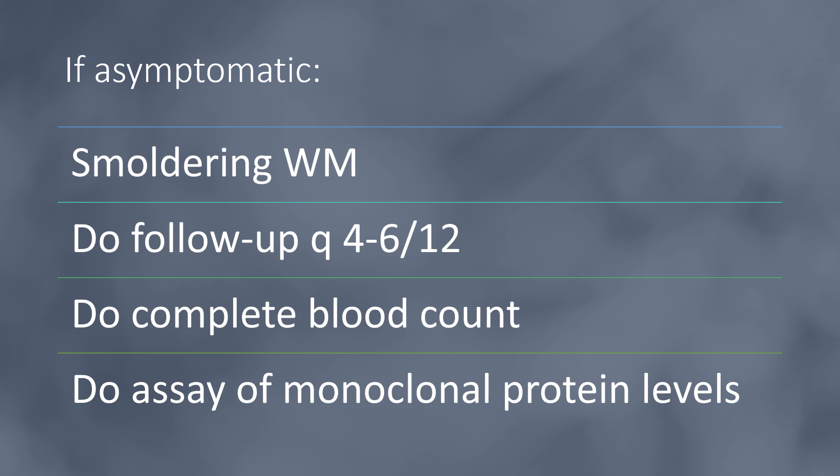If it is asymptomatic — like smoldering Waldenström macroglobulinemia — we may not treat, but we have to be following up, and we do that every four to six months. We will be running complete blood count while we are doing this, and we will assay for monoclonal protein levels.